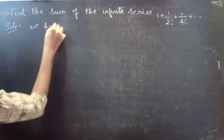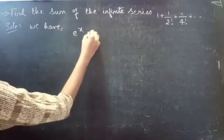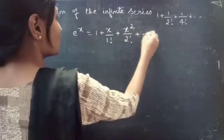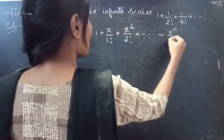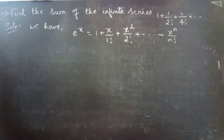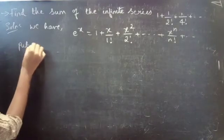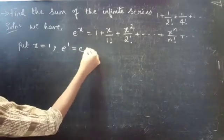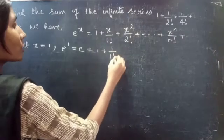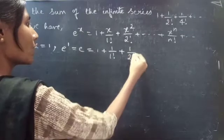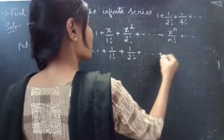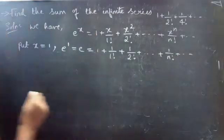We have e power x equals to 1 plus x by 1 factorial plus x squared by 2 factorial plus so on plus x power n by n factorial plus so on. Now put x equals to 1. Then we get e power 1, which equals e, equals 1 plus 1 by 1 factorial plus 1 by 2 factorial plus so on plus 1 by n factorial plus so on.